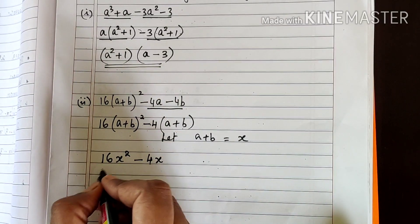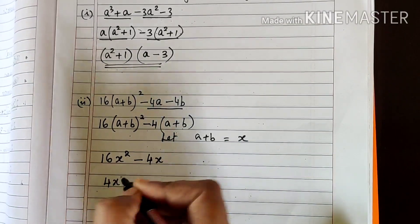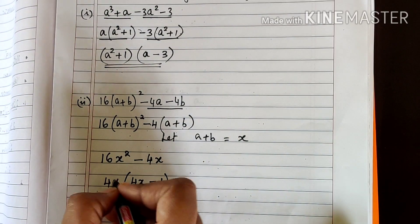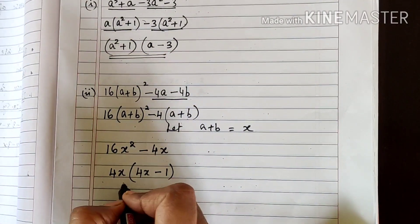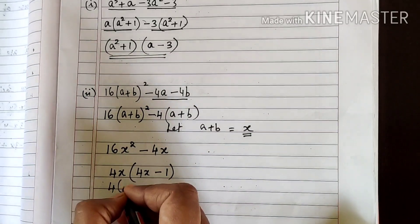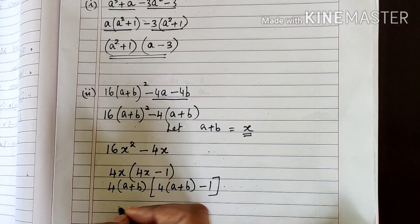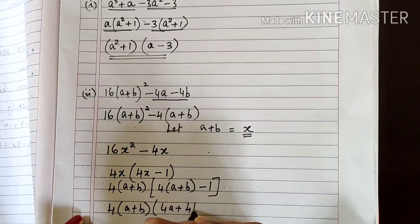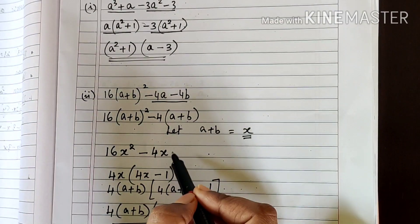Now factorize 16x² - 4x. The common factor for 16 and 4 is 4, and for x² and x it is x, giving 4x(4x - 1). This is not the final answer — substitute x = (a + b) back: 4(a + b)(4(a + b) - 1) = 4(a + b)(4a + 4b - 1). So wherever you have a binomial, substitute with a monomial, factorize, then substitute back.